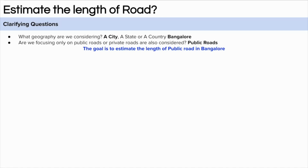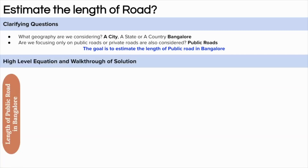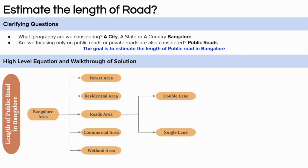I am also assuming that we are thinking about the concrete road and not the unmetalled one. So let's form the goal of the problem: to estimate the length of the concrete public road in Bangalore. Let's start with the high-level equation and the walkthrough of the solution. Since we have to calculate the length of the road in Bangalore, we will start with the area of Bangalore. That area can be divided into forest area, residential area, roads, commercial area, and wetland area. The area covered by road can be further divided into two broad categories: double lane road and single lane road.